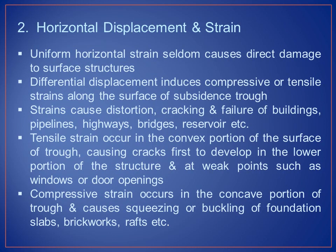Horizontal displacement and strain: uniform horizontal strain seldom causes direct damage to surface structures. Differential displacement induces compressive or tensile strain along the surface of the subsidence trough, causing distortion, cracking, and failure of buildings, pipelines, highways, bridges, and reservoirs. Tensile strain occurs in the convex portion of the trough, causing cracks first to develop in the lower portion of the structure and at weak points such as windows or door openings. Compressive strain occurs in the concave portion, causing squeezing or buckling of foundation slabs, brickwork, and rafts.